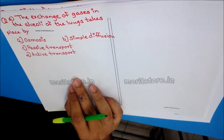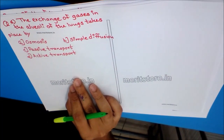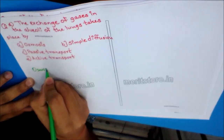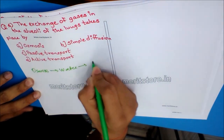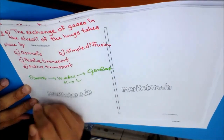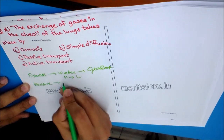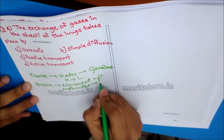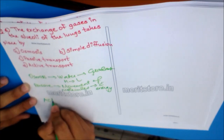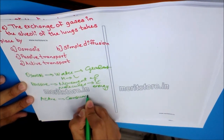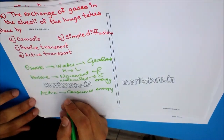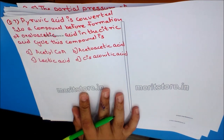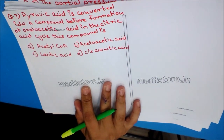Question 6: The exchange of gases in the alveoli of the lungs takes place by? Options: A) Osmosis, B) Simple diffusion, C) Passive transport, D) Active transport. Osmosis refers to movement of water under a concentration gradient. Passive transport is movement of molecules without energy, while active transport consumes energy. The answer is simple diffusion.